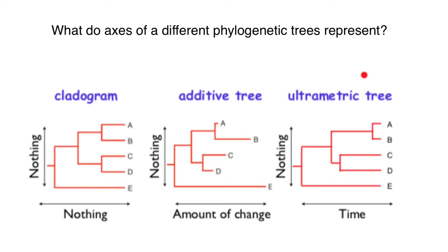Now let's compare with the ultrametric tree. Again, on the y-axis or vertical axis, nothing — but this time on the x-axis, the length of the species branches represents time. So now we can not only see the relationship between species, but also when speciation events happened. For example, between species A and B, the speciation event happened pretty recently, and between species C and D, much earlier in time, closer to the root.